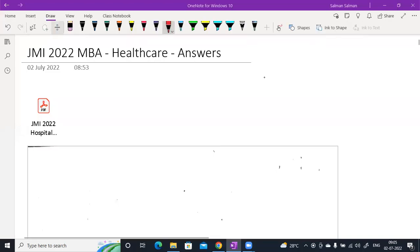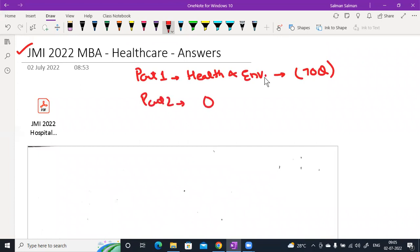Welcome students, welcome to Salman Sir Classes. I am going to discuss with you JMI 2022 MBA Healthcare answers. This is part 1. In this part we will discuss health and environment questions, around 70 questions. In the next part we will discuss QANT and LRDI questions. If you want to download the paper, you will have a link in the comment box.